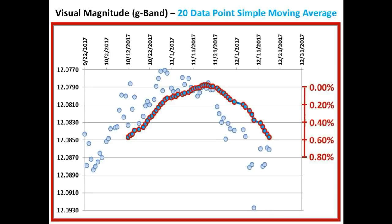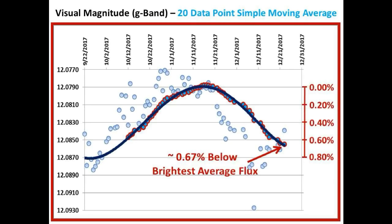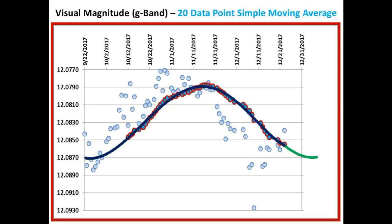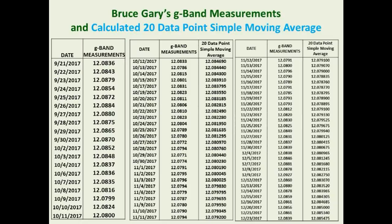Let's move forward in time to the present date by adding Bruce Gary's G-band measurements to this, and also advancing the corresponding 20 data point simple moving average. The best fit curve is shown here, and we are now down approximately 0.67% below the highest flux levels reached back on November 16th. Notice that the dimming is slowing down, and as predicted on this channel many weeks ago, we are completing the last portion of this bell-shaped curve in the timeframe in which we predicted it. We believe we are going to complete the final tail of this curve over the next few weeks. What we show by the green line is the final predicted completion of this curve. The trick to accurately predicting the future shape of the light curve is to use the 20 data point simple moving average to take out the variability in the measured data and to determine the trend line.